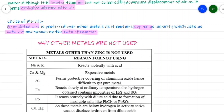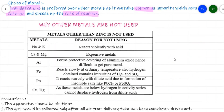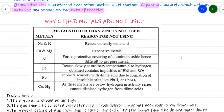Now let us consider why other metals are not used. Potassium and sodium, which are at the top of the activity series, react very violently with acid — the reaction is very violent, with rapid evolution of hydrogen, and can lead to an explosion.